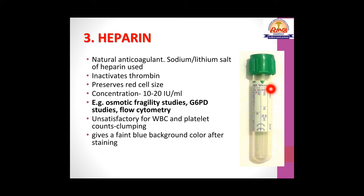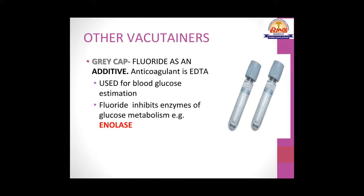Heparin vacutainer can also be used to study enzymes inside RBCs such as G6PD and pyruvate kinase deficiency, and for flow cytometry. It is not useful for WBC and platelet counting as it causes clumping of these cells, and it is not used for peripheral blood smear preparation because it gives a faint bluish background after staining. The gray cap vacutainer contains fluoride as an additive with EDTA as the anticoagulant. Fluoride inhibits enzymes of glucose metabolism like enolase, maintaining glucose levels in the sample for blood glucose estimation.